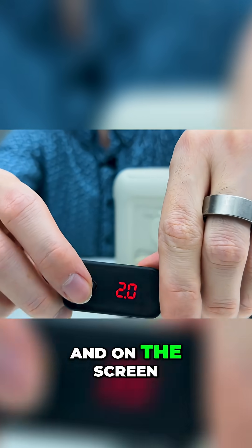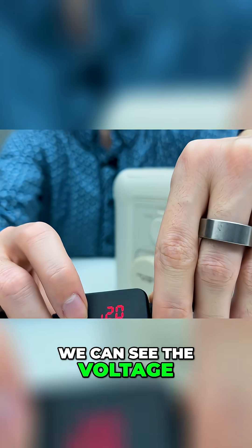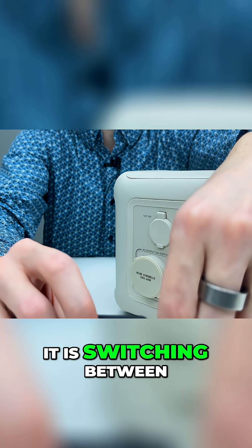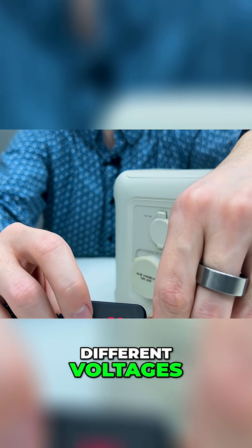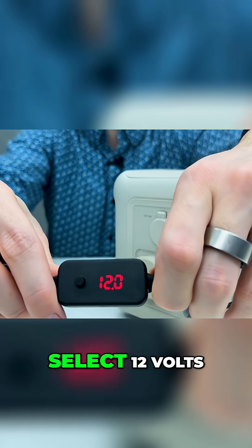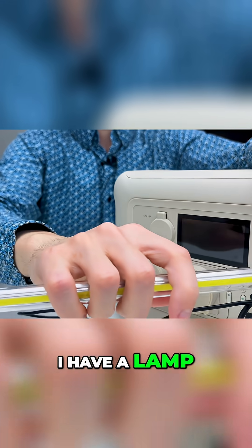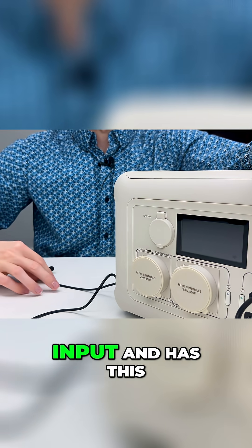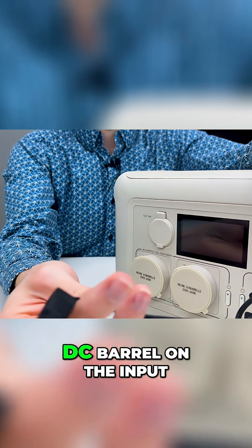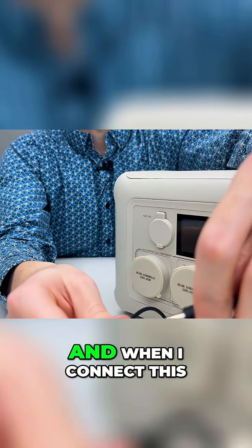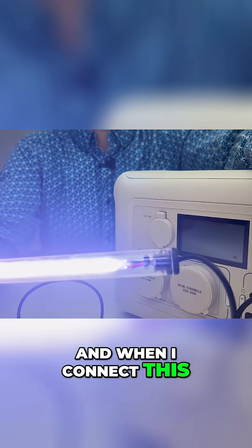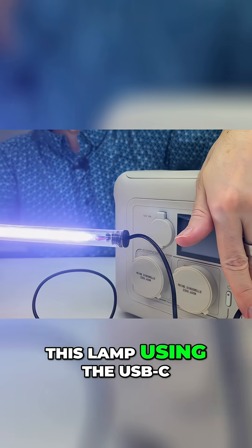On the screen we can see the voltage. If I press the button, it's switching between different voltages. Let's select 12 volts, for example. Right here I have a lamp that needs 12 volts input and has this DC barrel on the input. When I connect this, I am now powering this lamp using the USB-C.